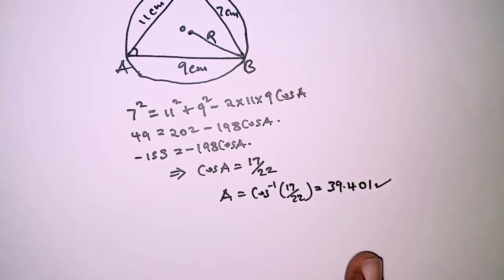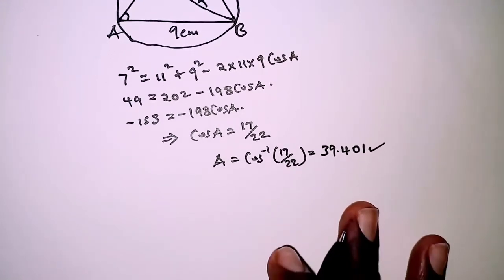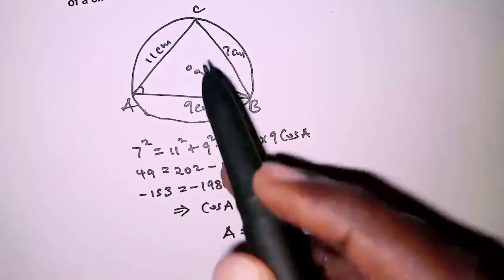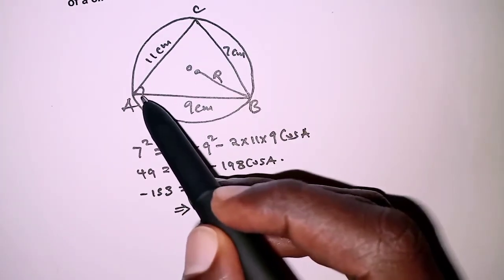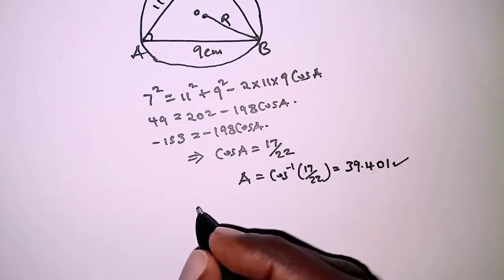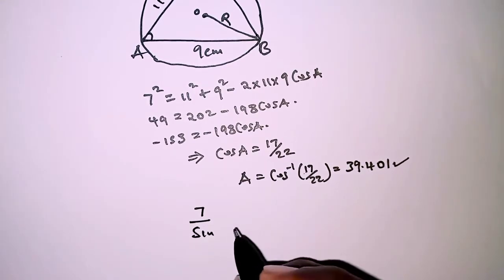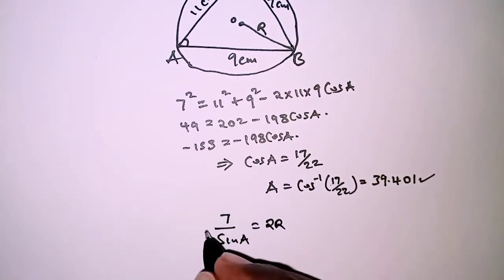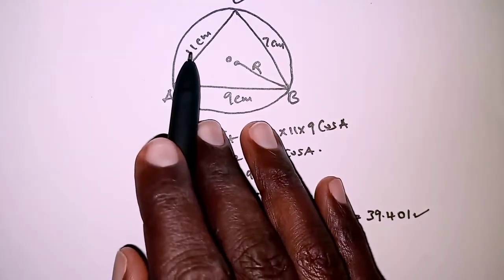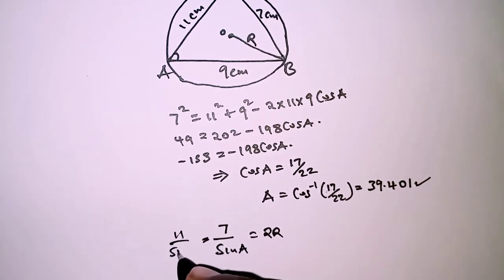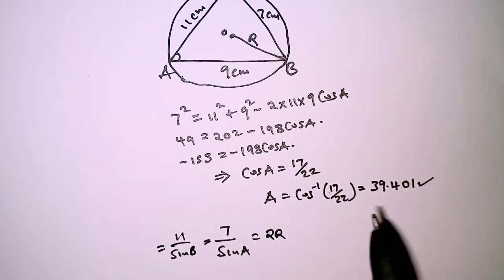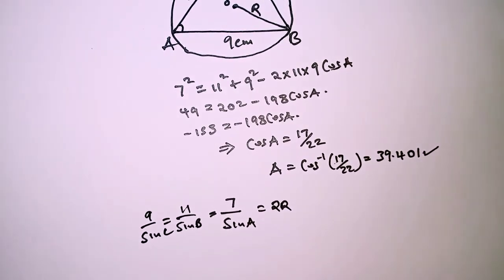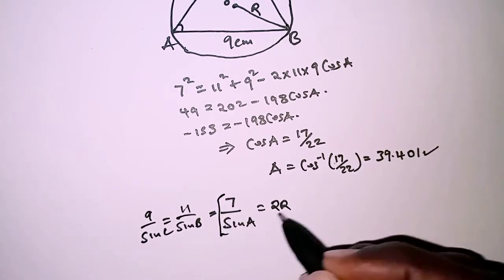With angle A determined, we can find the radius using the sine rule. The sine rule states that the opposite side over the sine of its angle equals twice the radius — for example, 7 over sine A equals 2R. This is the same as 11 over sine B, or 9 over sine C. Since we already have angle A, we use that part.